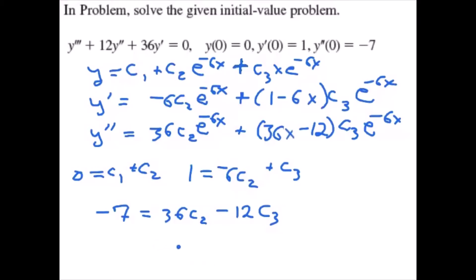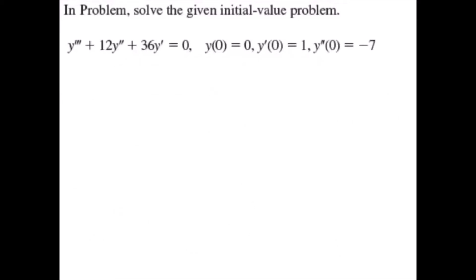Taking all those together, we have three equations and three unknowns. Solving the system however we want, we'll find c₁ = 5/36, c₂ = -5/36, and c₃ = 1/6. So we've solved for c₁, c₂, c₃; let's plug them in to get our final result.